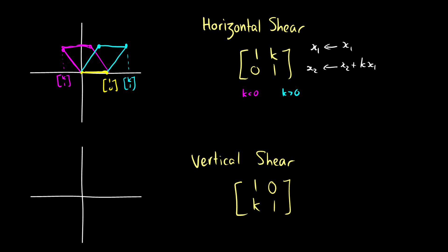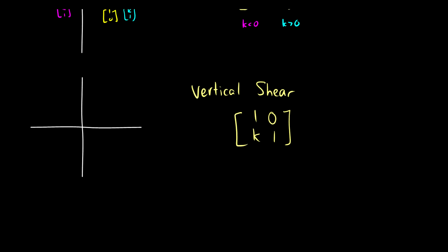Vertical shear, same sort of idea. We start out with our box on the x2 axis here. If k is going to be less than 0, then it gets sheared down. But if k is greater than 0, then it gets shifted up. So these are shears. Again, the matrix form, you see this k here. In this case, x1 becomes x1 + k times x2, and x2 just stays the same as x2. So these are shears.